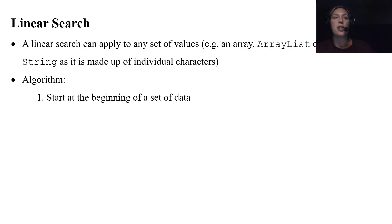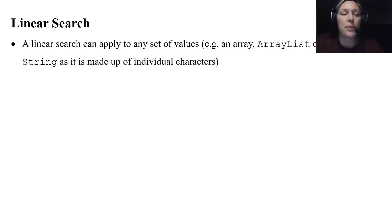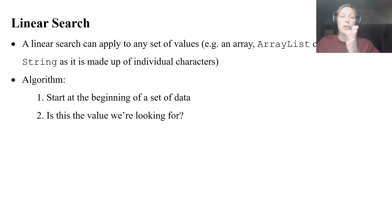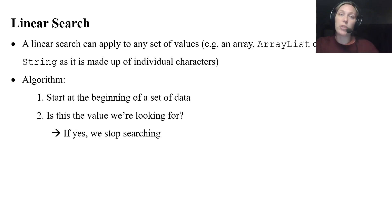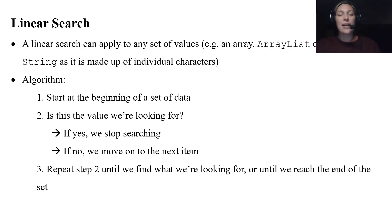The basic algorithm, step by step: we start at the beginning of a set of data, whether that's an array, ArrayList, string, or whatever it may be. We check if the current value, starting at the beginning, is the value we are looking for. If it is, we're done — we found the value. If it's not, we just move on to the next item and repeat this step, looping through until we reach the end of the set or until we find what we're looking for.